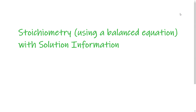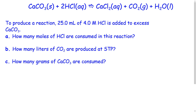Our third video lesson for solutions in stoichiometry involves combining the information from video lessons one and two, but this time incorporating a balanced chemical equation. We're going to go through four example problems stepwise, each with a different purpose. As we consider the first example, we want to make sure our equation is balanced—in this case it is—so that should be the first thing you're looking at.